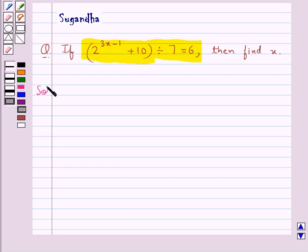Let's move on to the solution. We are given that 2 to the power 3x minus 1 plus 10 when divided by 7 gives us 6, and we need to find the value for x.